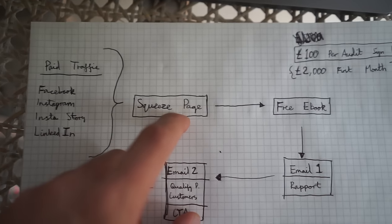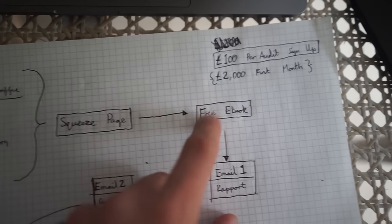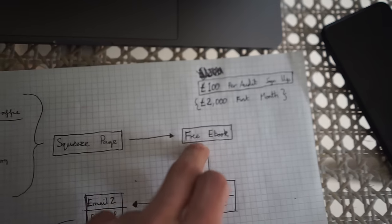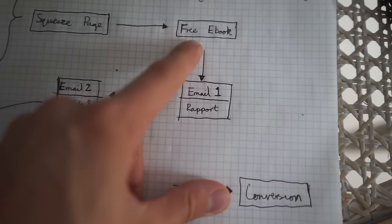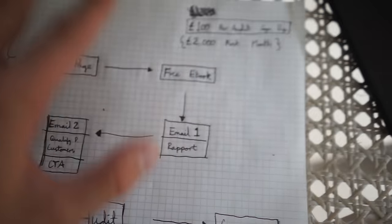Once they've gone through the squeeze page, they receive their free ebook via an automated email. Now the ebook actually builds rapport and puts me in a position of authority. Your free ebook will really dictate how many conversions you get and how far along you can bring people through the funnel, because it's their first point of contact with yourself or your business. This seven-to-eight page free ebook I've given them — I'm very happy with how it came out.